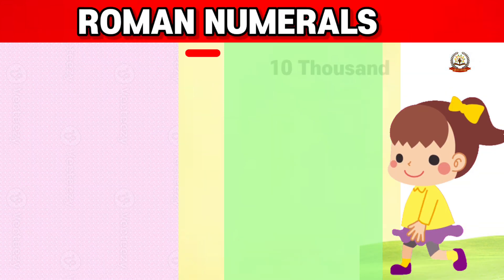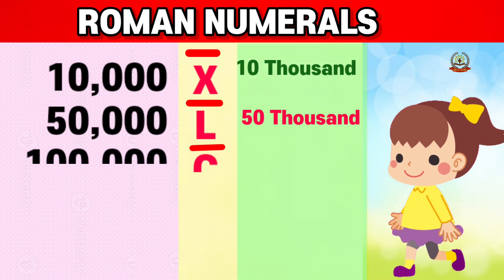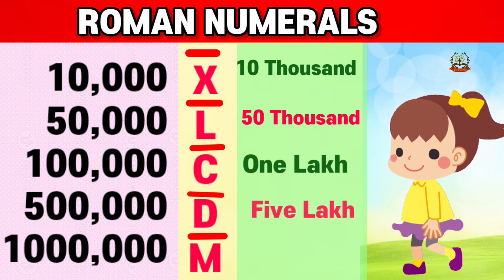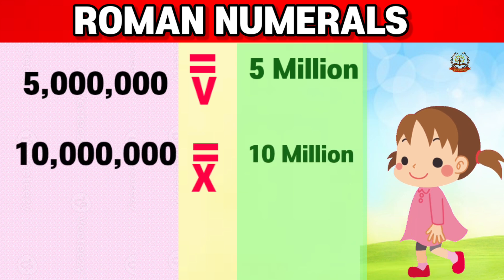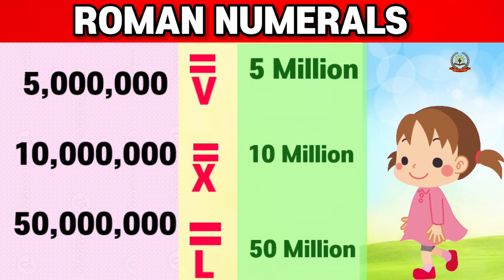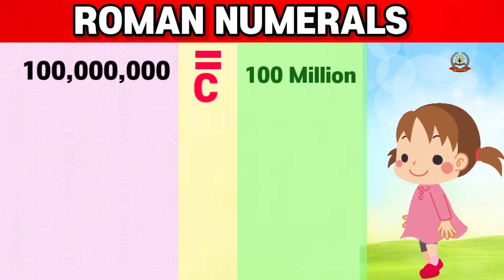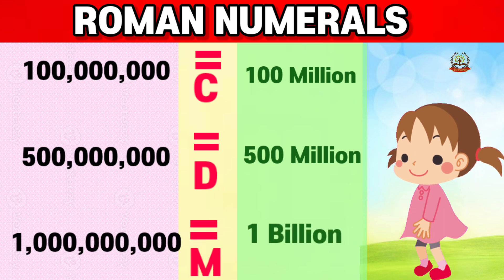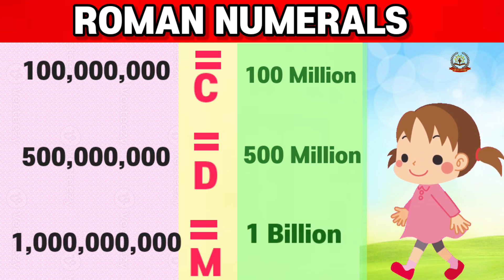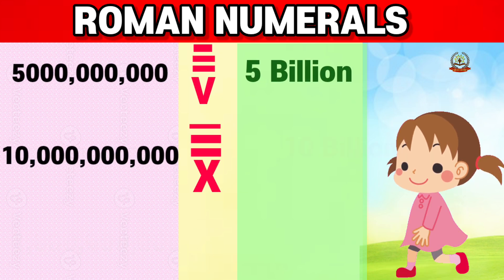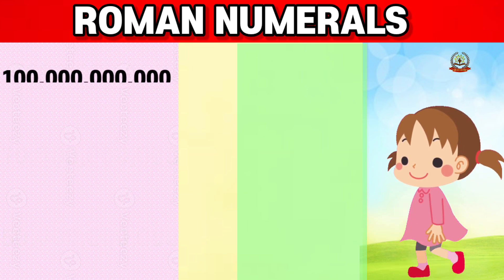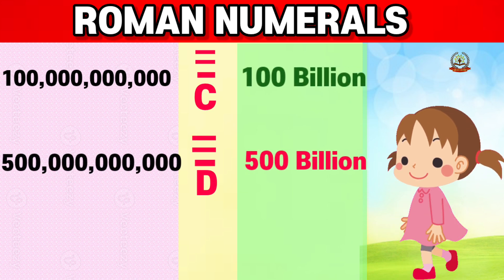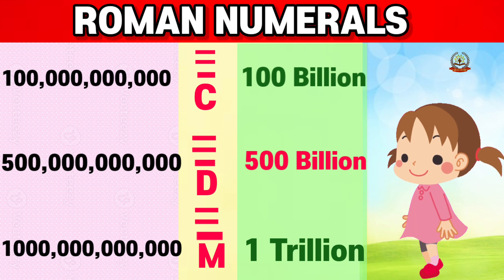Let's learn more higher numbers. 10,000, 50,000, 1,00,000, 5,00,000, 1,000,000. That's great. Well done. 5,000,000, 10,000,000, 50,000,000, 100,000,000, 500,000,000, 1,000,000,000. That's good.